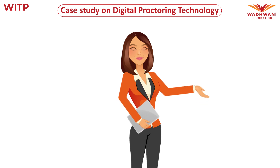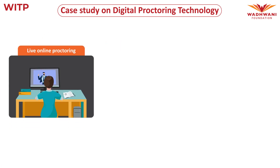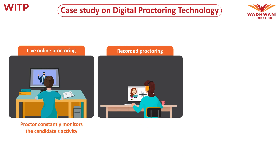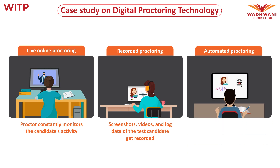In general, digital proctoring is of three types. Live online proctoring, where the proctor constantly monitors the candidate's activity throughout an online proctored exam. Recorded proctoring, where there is no proctor monitoring; instead, screenshots, videos, and log data of the test candidate are recorded. Automated proctoring is an advanced form where, in addition to monitoring the candidate, it also monitors the feed for any suspicious activity.